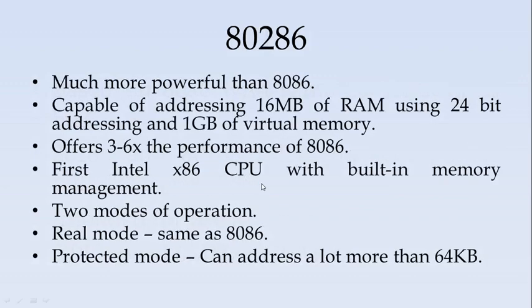The next set of processors were the 80286. The 80286 processors were much more powerful than 8086. They were capable of addressing 16 MB of RAM using 24-bit addressing and 1 GB of virtual memory. It offered around 3 to 6 times the performance of 8086. This was the first Intel x86 CPU with built-in memory management, integrated into the chip itself. It supported two modes of operation.